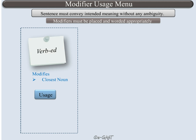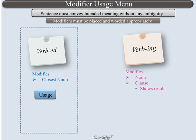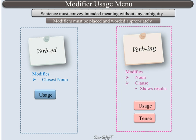VERB-ING modifiers are very versatile modifiers since they can either modify the noun or the complete clause. Since VERB-ING modifiers typically represent an action, we will also learn about the tenses. Now click on any of the buttons to view the details.